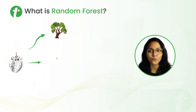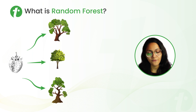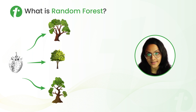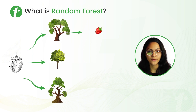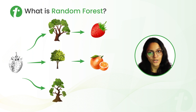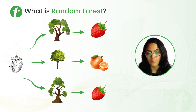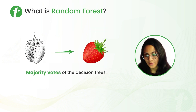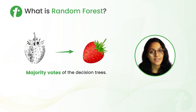Let's understand this with an example. Let's say we have these random decision trees and we provide some unknown fruit to these decision trees. The first decision tree predicts that it's a strawberry, the second predicts it's an orange, and the third predicts it is a strawberry. So we have majority votes for strawberry, and our final decision will be that the given unknown fruit is a strawberry.